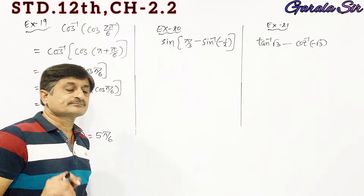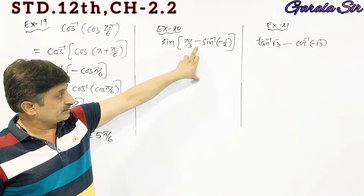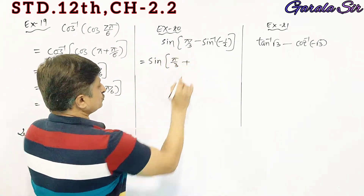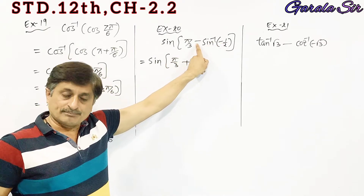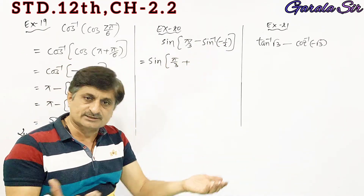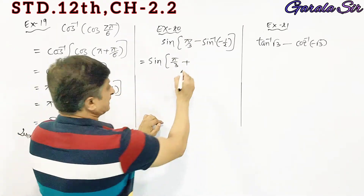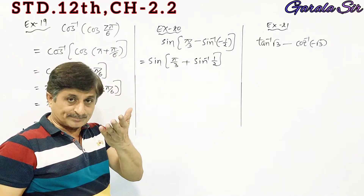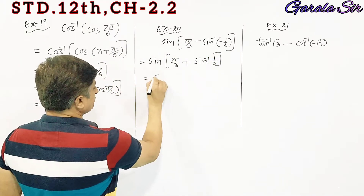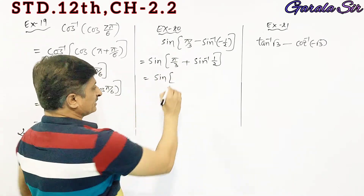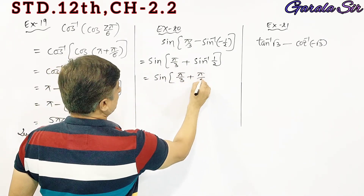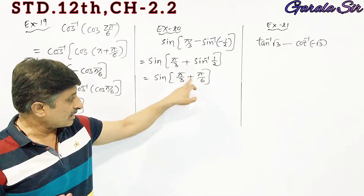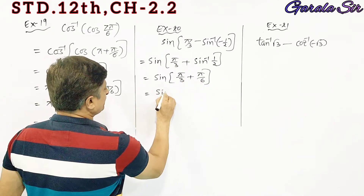Sine: pi by 3, minus sin inverse of minus pi by 3. Using the identity sin inverse of minus x equals minus sin inverse x, plus sin inverse 1, we get 5π/3 plus 5π/6, giving 5π/2. Clear?